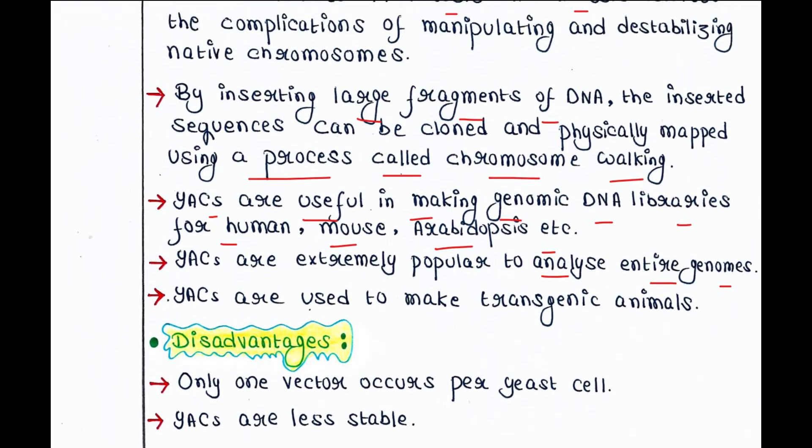The disadvantages of YAC: only one vector occurs per yeast cell. In case of plasmid we can get hundreds of copies per bacterial cell, but with YAC you get only one per yeast cell. Additionally, YACs are less stable compared to plasmid and cosmid.